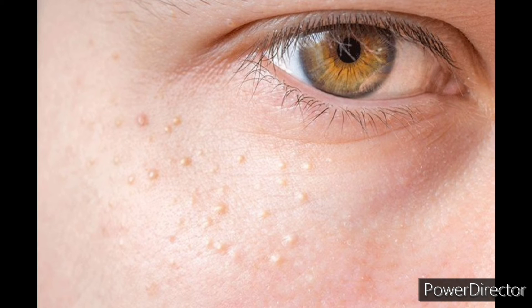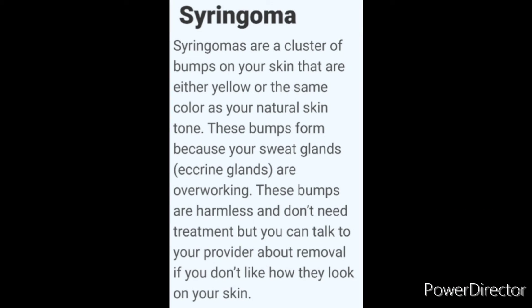Sometimes the eccrine glands of our skin can get clogged, causing what we see pictured here. This is called a syringoma. A syringoma is a cluster of bumps on your skin that are either yellow or the same color as the natural skin tone. These occur because your sweat glands get clogged and are overworking. These bumps are really harmless and don't really need treatment, but if you don't like them you can talk to your esthetician or dermatologist about removal.